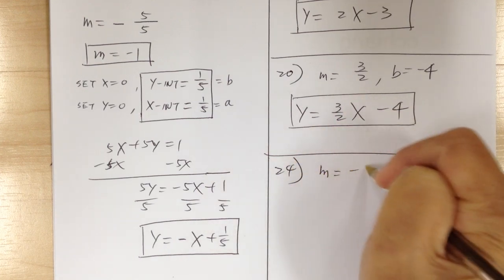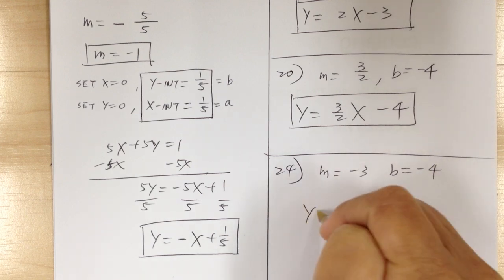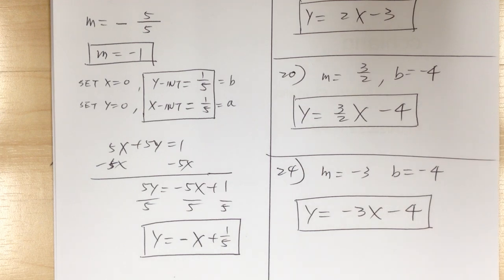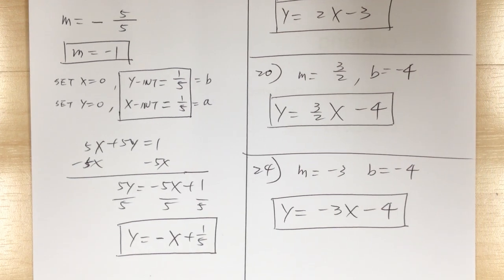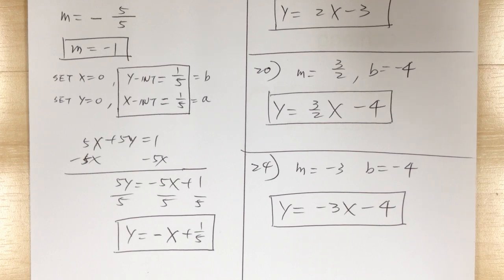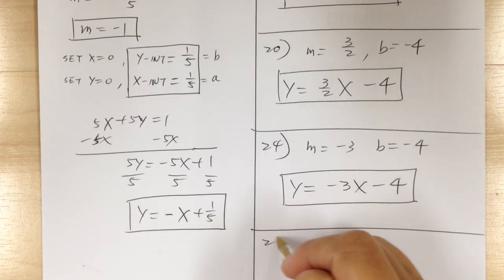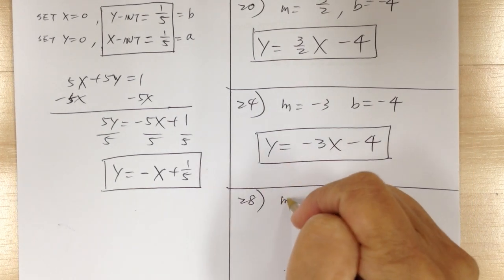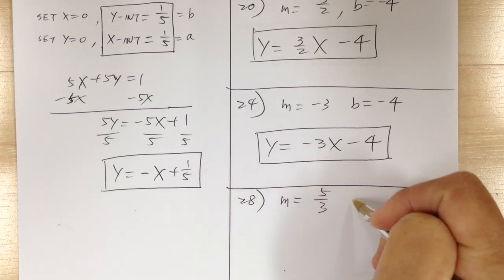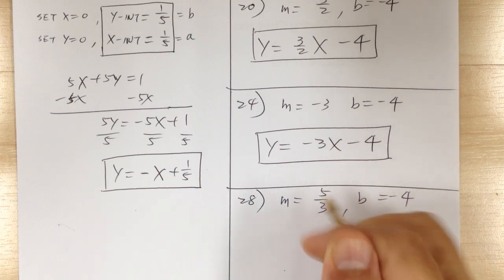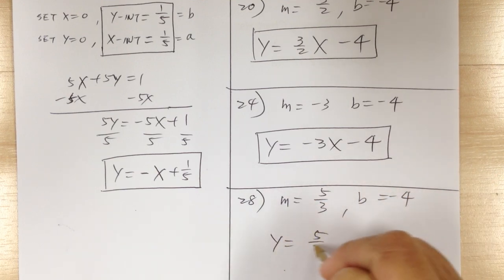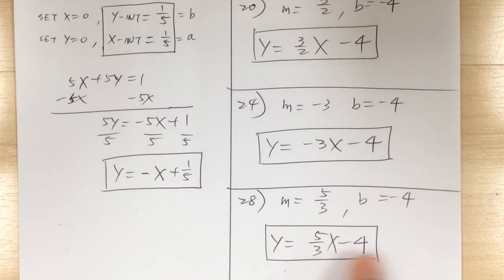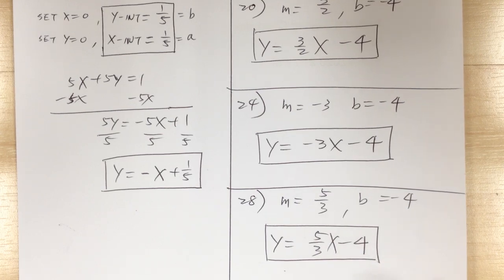Number 24: m equals negative 3 and b equals negative 4, so y equals negative 3x minus 4. Number 28: m equals 5 over 3 and b equals negative 4, so y equals 5 over 3 times x minus 4. These are all in slope-intercept form and it's very straightforward.